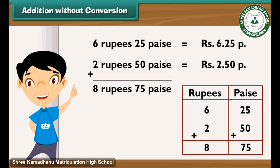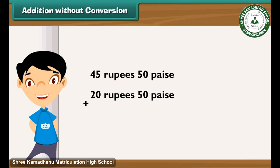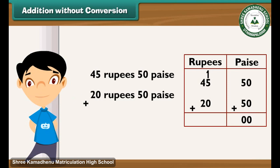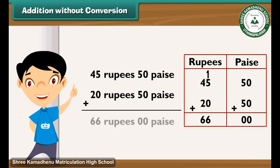Now take another example. Add 45 rupees 50 paise and 20 rupees 50 paise. Step 1: Add the numbers in the paise column — 50 plus 50 is equal to 100 paise. We know that 100 paise is equal to 1 rupee, so write 00 in the paise column and carry forward 1 to the rupee column. Step 2: Add the numbers in the rupees column — 1 plus 45 plus 20 is equal to 66 rupees. Write 66 in the rupees column. So the answer is 66 rupees.